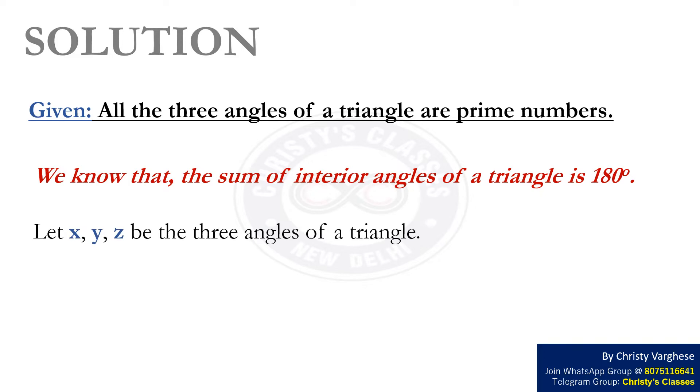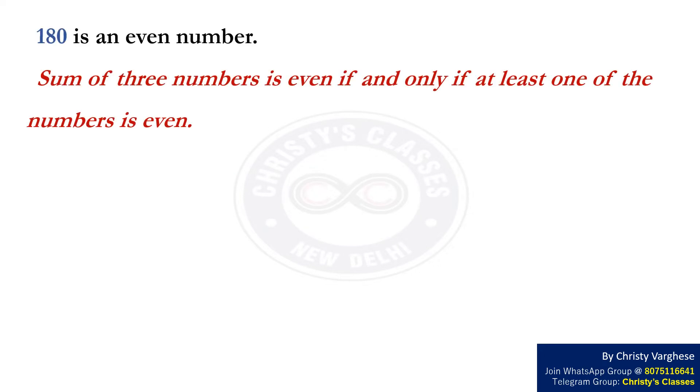Let X, Y, and Z be the three angles of a triangle. This implies X plus Y plus Z equals 180 degrees. 180 is an even number. We know that the sum of three numbers is even if and only if at least one of the numbers is even.